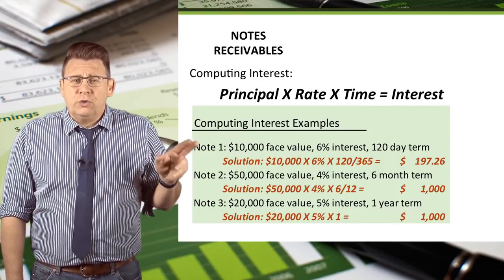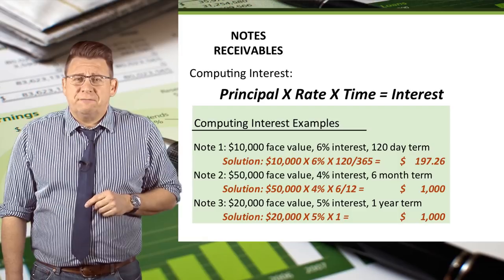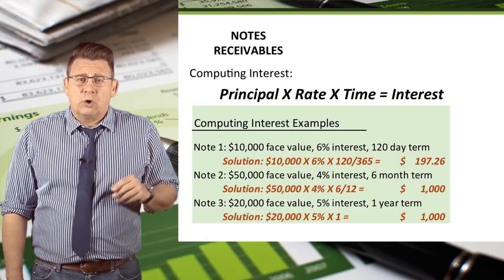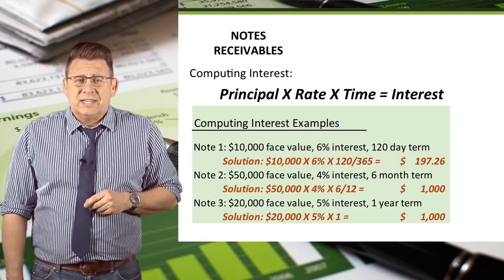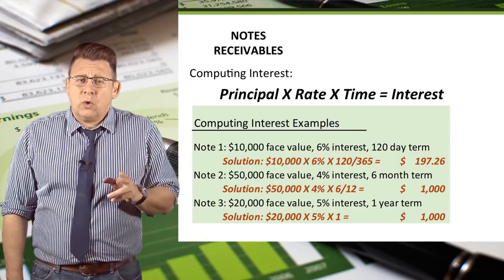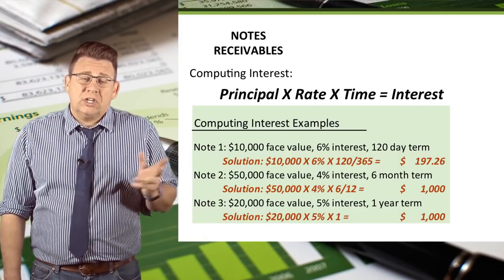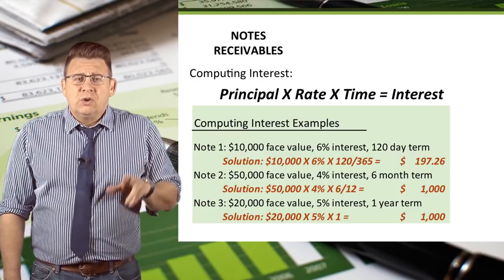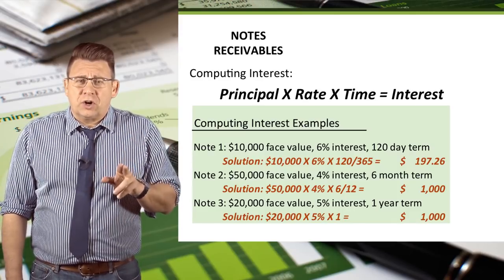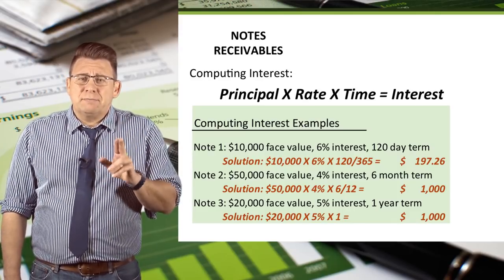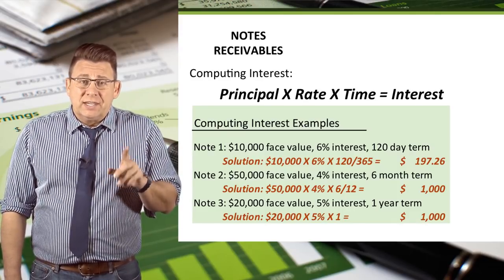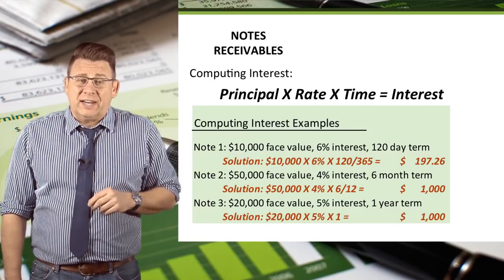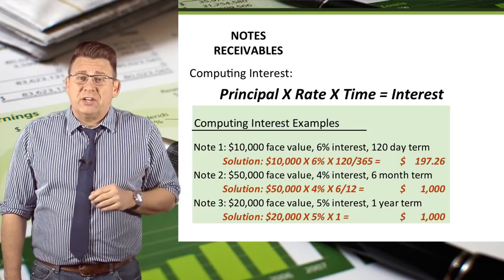For note two, the interest is $50,000 times 4% times 6/12, which equals $1,000. You can see that the term of 6 months is converted into years by dividing 6 by 12.